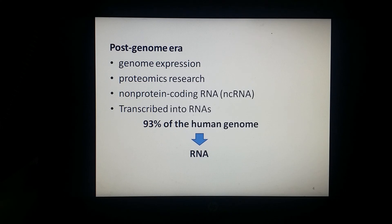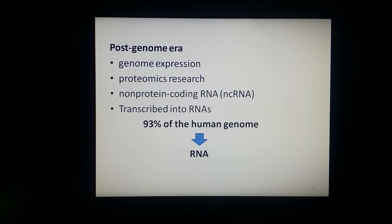Third, the structure and functional studies of non-protein-coding RNA expand the scope of transcriptomics. In addition to protein-coding genes, both prokaryote and eukaryote genomes contain non-protein-coding sequences as well. Transcriptomic studies have shown that the vast majority of the eukaryotic genome is transcribed into RNAs — for example, more than 93% of the human genome is transcribed into RNAs, and among this only about 2% is from the coding region.